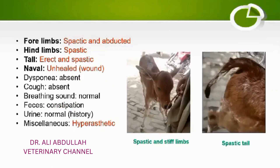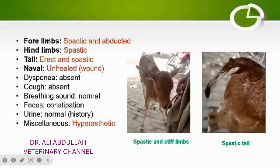The forelimbs were very spastic, very stiff, and abducted — moving away from the body — as you can see in this picture. The hindlimbs were also spastic, which are not clearly seen in this picture, but they were very spastic as well.